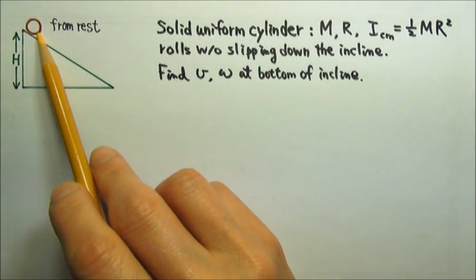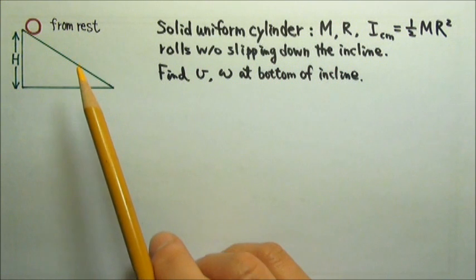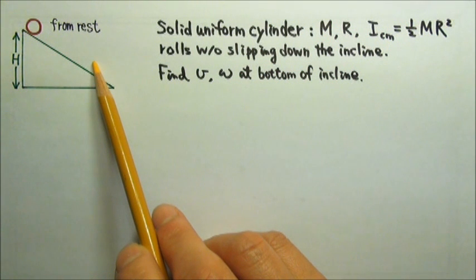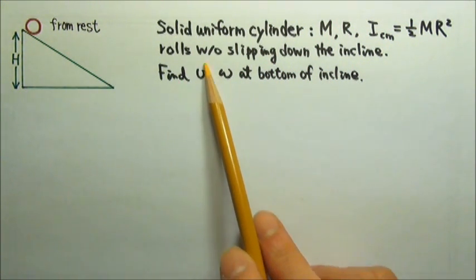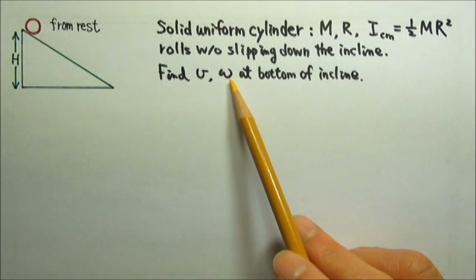Because this cylinder will do constant acceleration motion down the incline, we can solve this problem by writing the force and torque equations, and find the constant acceleration, and use kinematics to find the speed. But in this lesson, let's take a different approach and use conservation of energy to find the final speed and angular speed.